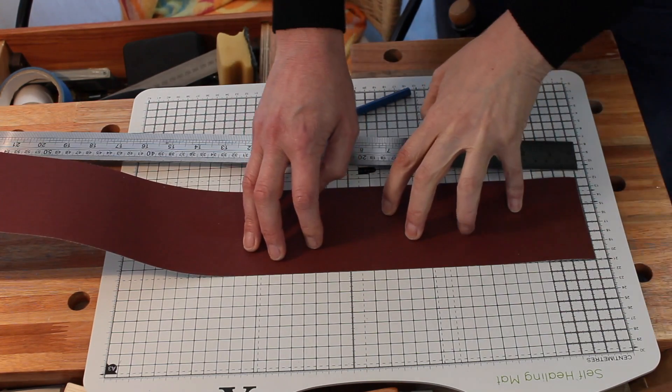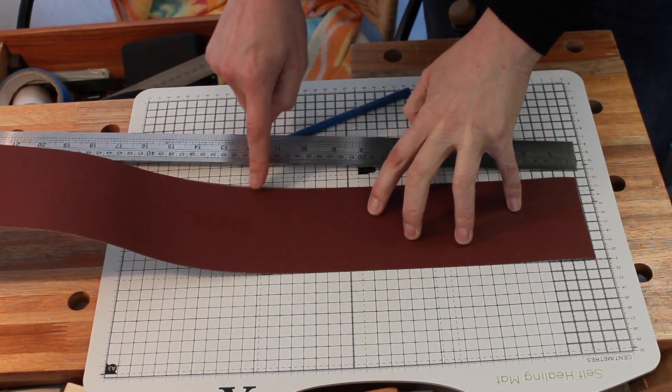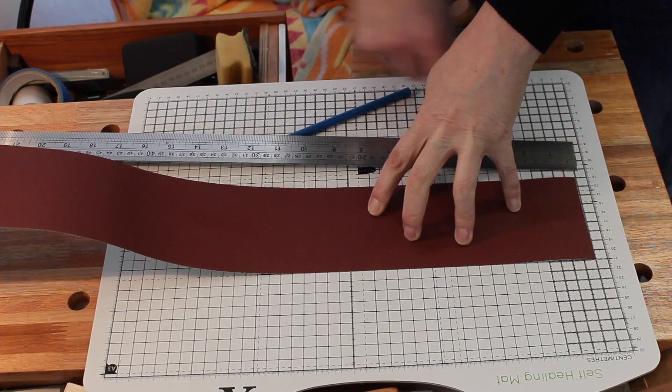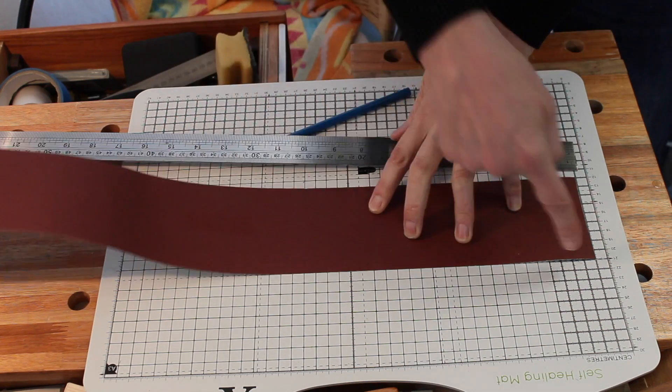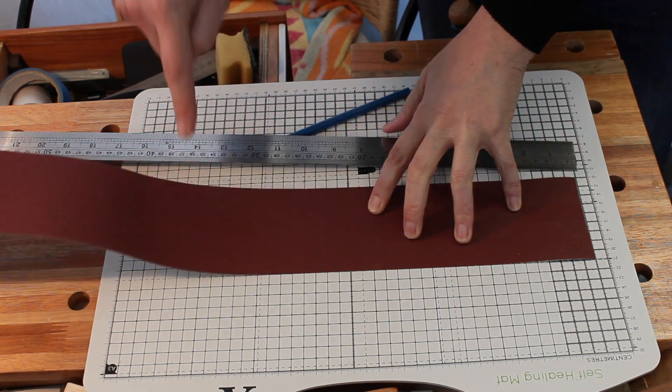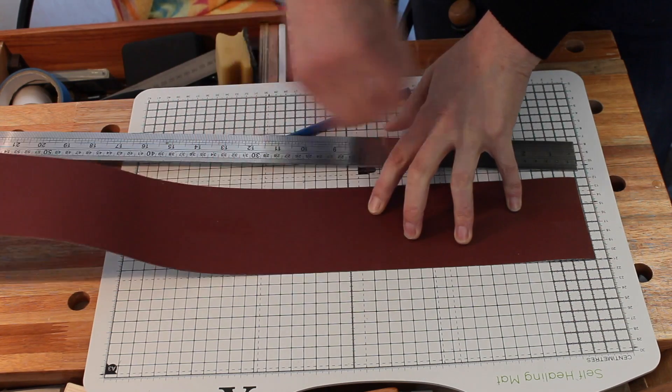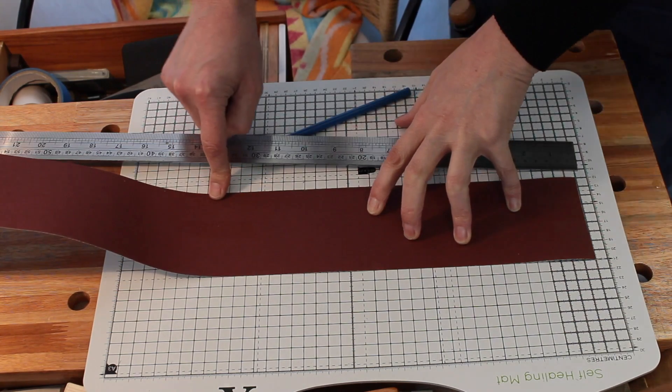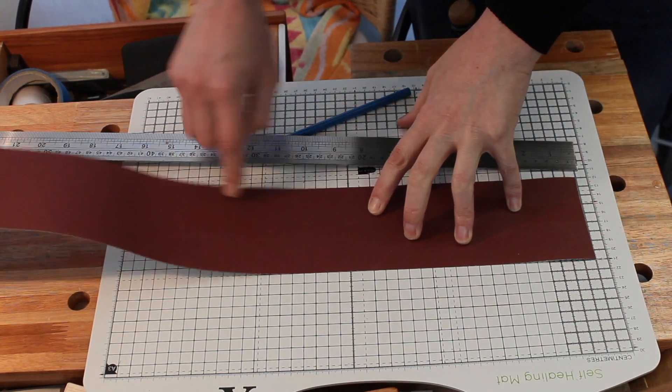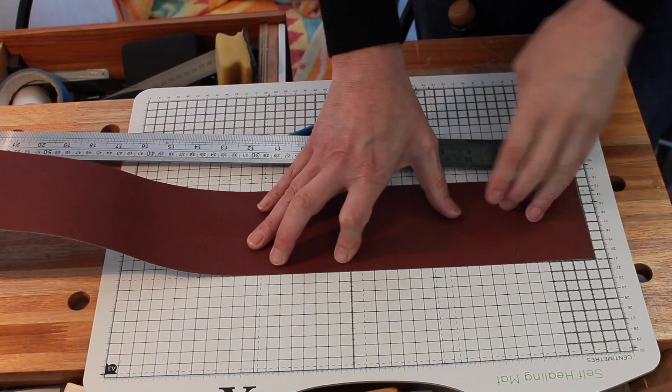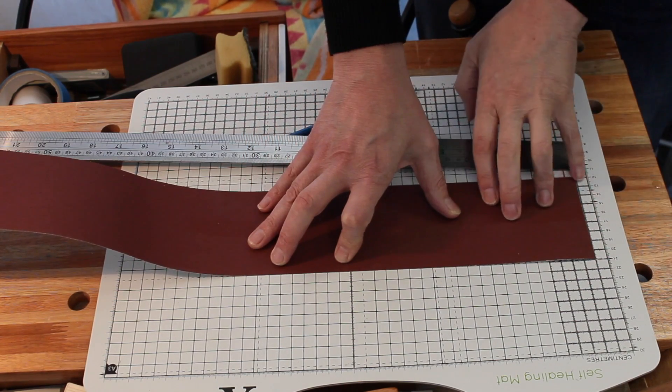Now if we really want to go to town on the mathematics, we could use Pythagoras to get the distance along this edge where we've got to take the taper to. And if we did it would be 388.7, 389 millimeters. But that only really works if this edge is square and here it isn't.